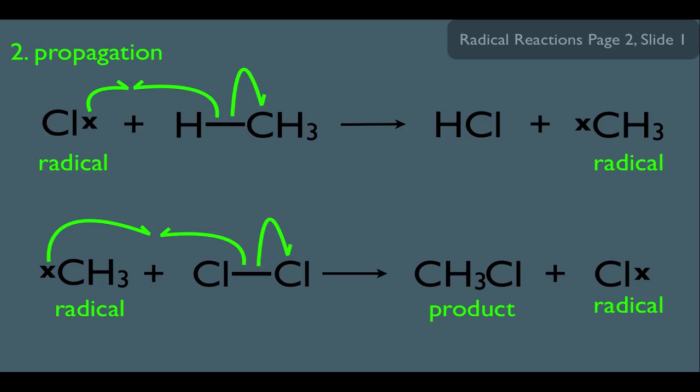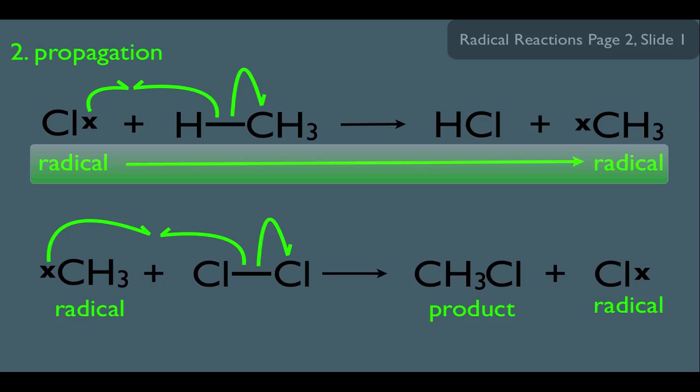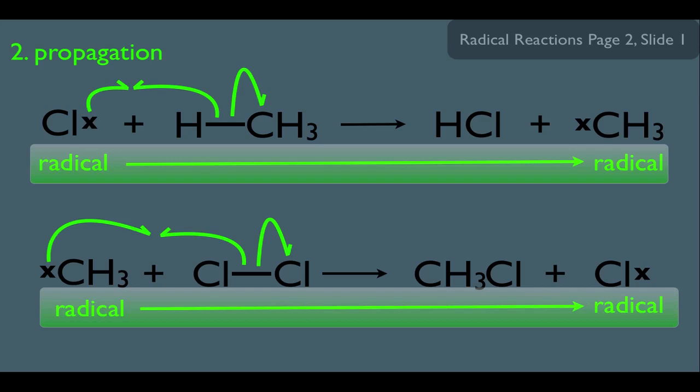Let's focus now on what it means to be a propagation step. Notice the characteristics here: propagation steps start with radicals and end with radicals, but not the same radical. It's a different radical. In this case, Cl radical going to methyl radical. And in the other propagation step, we have the methyl radical going to the Cl radical. Make sense of this. Propagation means to keep going. If we're just simply going from one radical to another, we're able to keep this reaction going by producing radicals, which will then go on to react with other non-radicals. Which means these propagation steps will keep happening as the reaction proceeds.